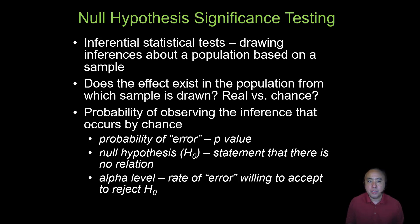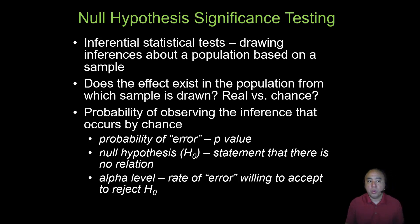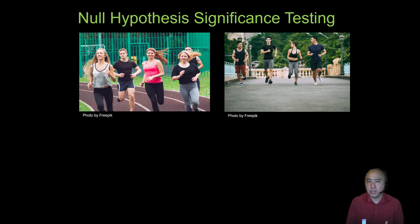We're going to cover how we statistically test these hypotheses — specifically, we're testing the null hypothesis. Inferential statistical tests answer the question: does the effect or treatment exist in the population from which the sample is drawn, or does it happen by chance? The probability of observing the inference in our sample is known as the p-value, and it gives the likelihood that the outcome from our analysis exists in the population assuming the null hypothesis is true.